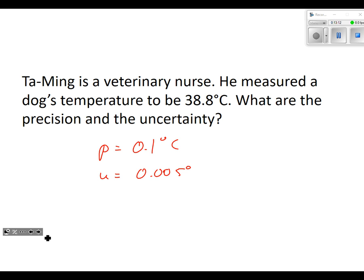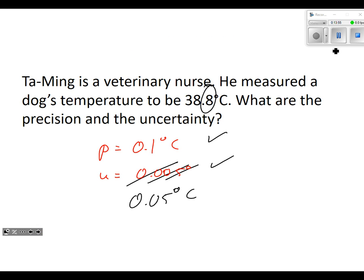Ta-Ming is a veterinary nurse. He measured a dog's temperature to be 38.8 degrees Celsius. What are the precision and the uncertainty? It's 38.8, so that tells you that the precision is a tenth of a degree, 0.1. And again I did the same thing, didn't I? How much would you get on an exam do you think? I would be inclined, if that was worth two marks, to give you one and a half because clearly I just made that mistake. You know what you're doing, you just made a screw up. That said, I don't know what the province says. They might say no, it's either right or wrong. So be careful, check your work over.